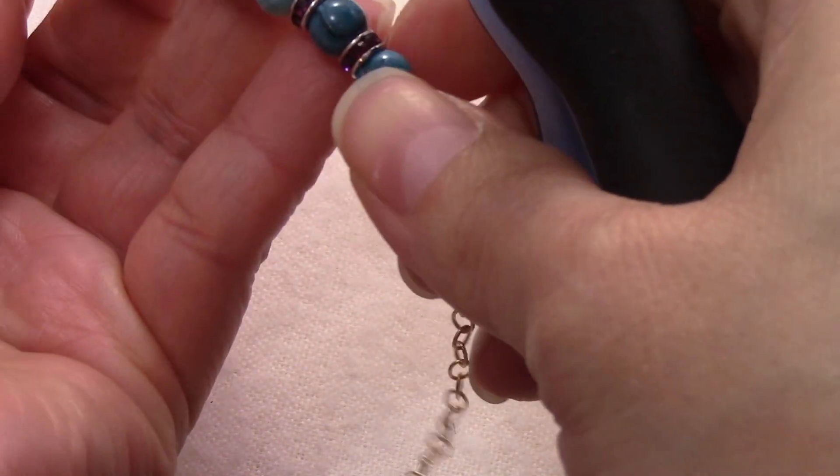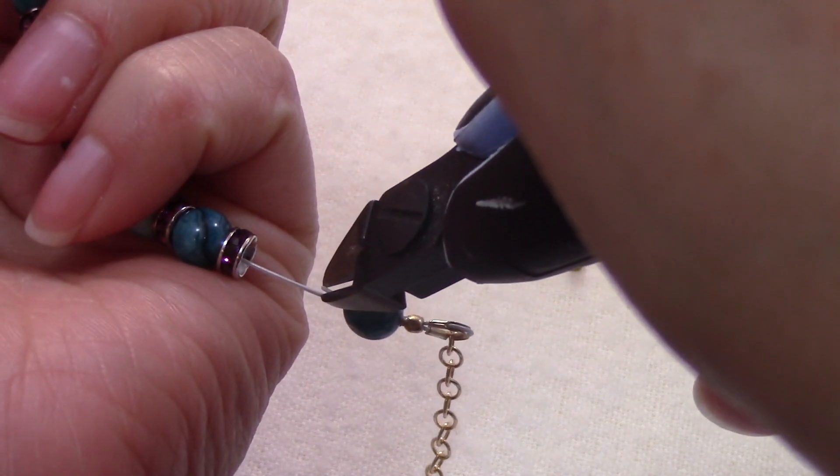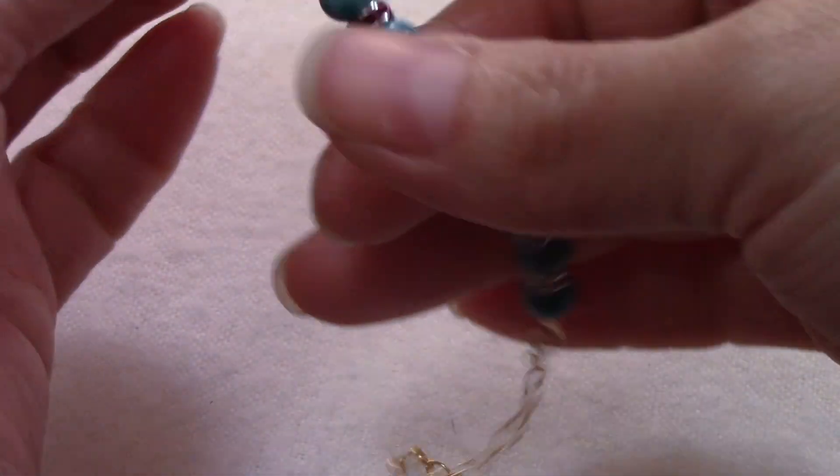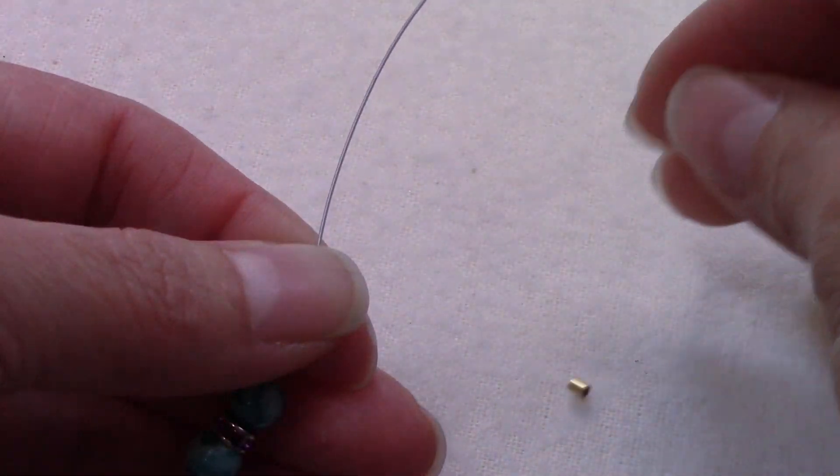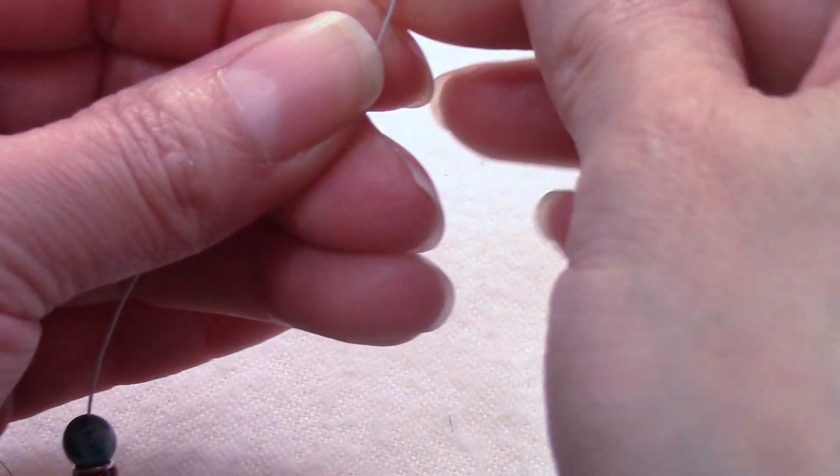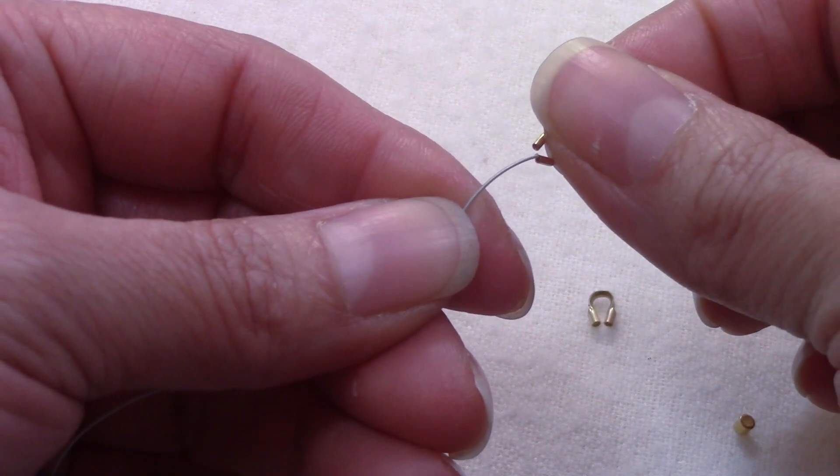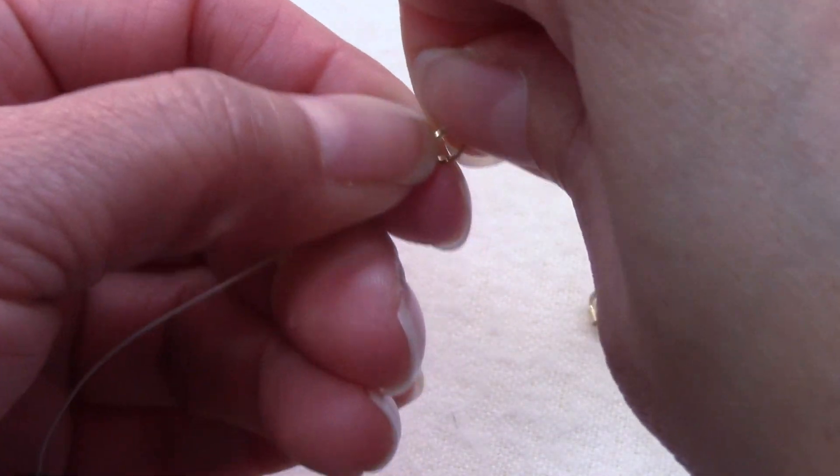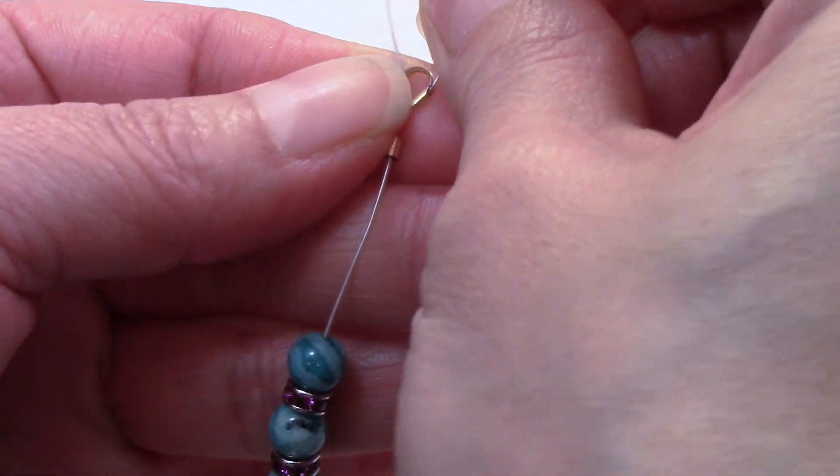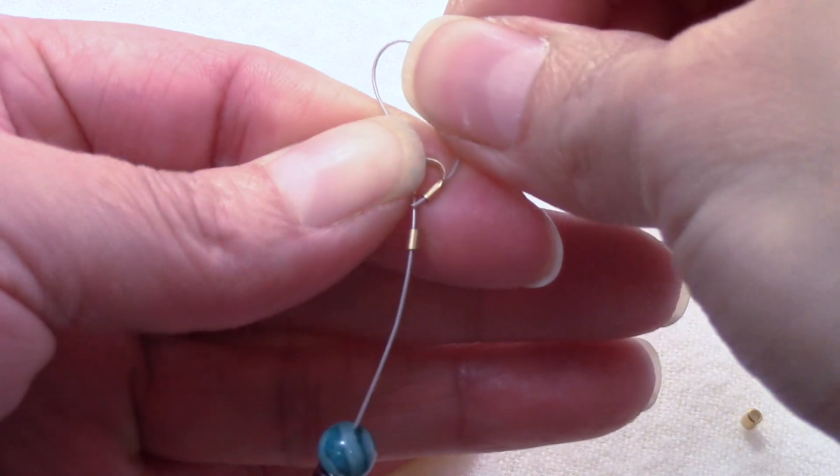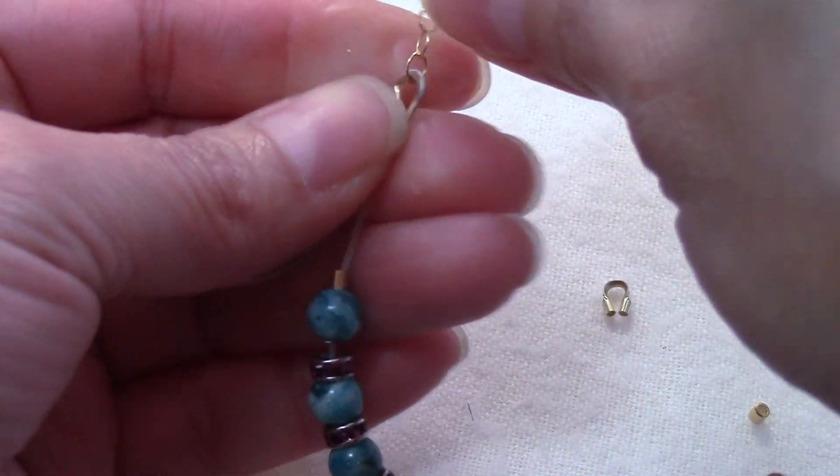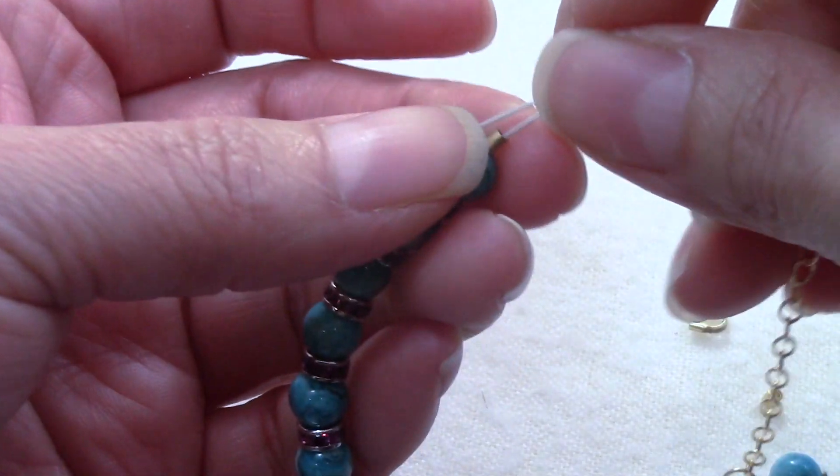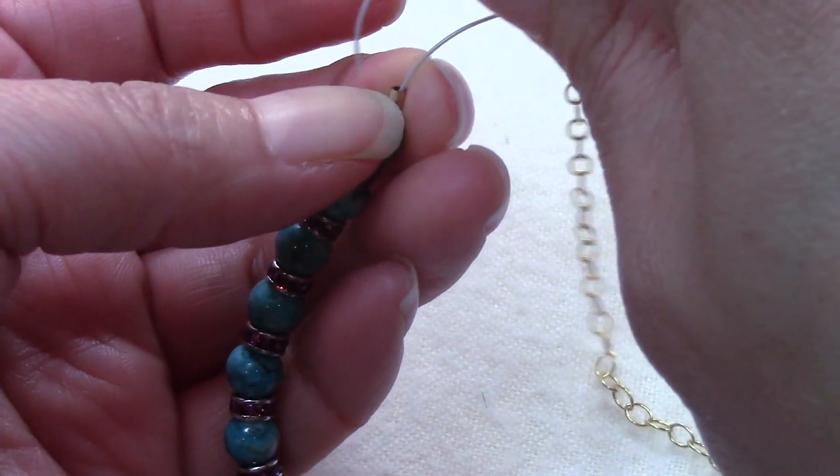So this is what you have so far. We are going to pick up our crimp bead, our wire guardian, bring it to the other side of the wire guardian. We are going to pick up the other side of our chain and we are going to string it. We have to pass the wire through our crimp bead.